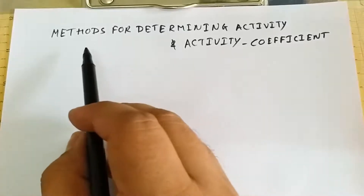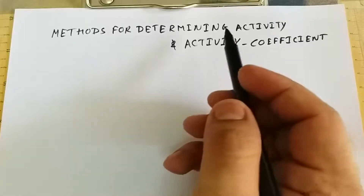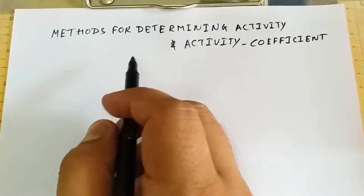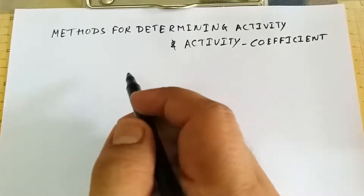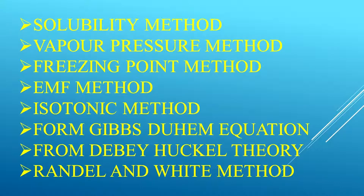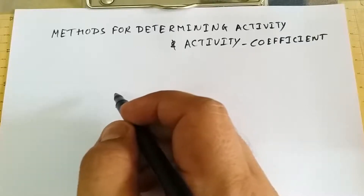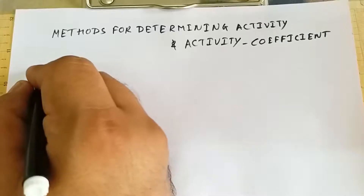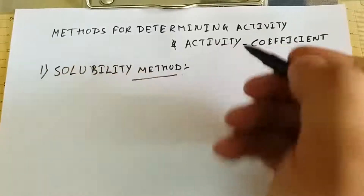Welcome back. Today we are going to discuss several methods to determine activity and activity coefficient. Some very renowned methods are: solubility method, vapor pressure method, boiling point method, EMF method, isotonic method. Activity can also be determined from the Gibbs-Duhem equation, the Debye-Hückel theory, and the Randall-White method. Today we are going to discuss the solubility method.